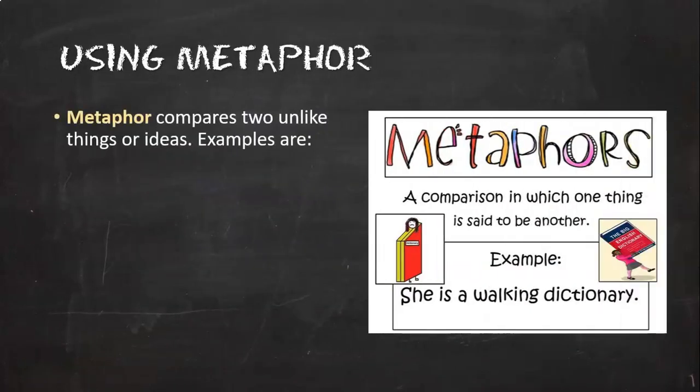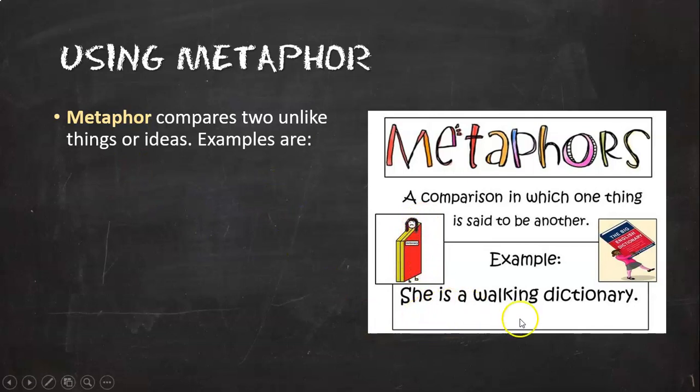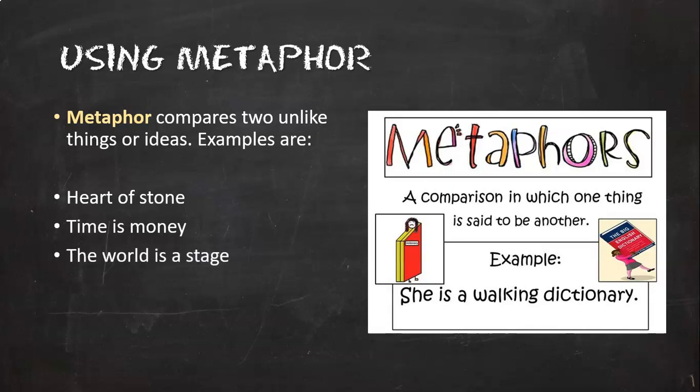Now finally we got metaphor. Metaphor compares two unlike things or ideas. So you could say that somebody that knows a lot of words is a walking dictionary. Now is she really a walking dictionary? No, she just knows a lot of words, so she's not a walking dictionary. You're comparing two unlike things, in this case a girl with a book. You could say that a man has a heart of stone. That means he doesn't have much compassion. Or you could say that time is money. Time's not really money, you're just comparing time to money. Or the world is a stage. Or she is a night owl. She's not really a night owl, you're just comparing her to a night owl because she stays up so much.